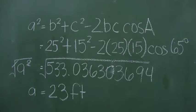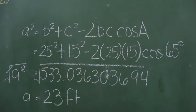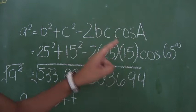Let us substitute the values: 25 squared plus 15 squared minus twice the product of 25 times 15 times cosine 65 degrees. Now let us get the square root of the answer. The value of side A is 23 feet.